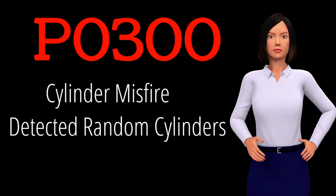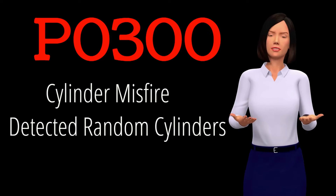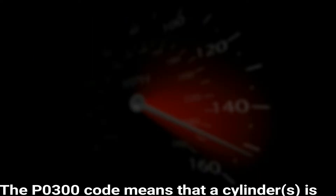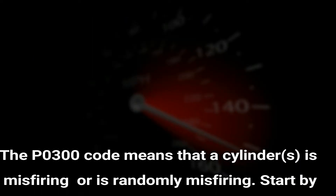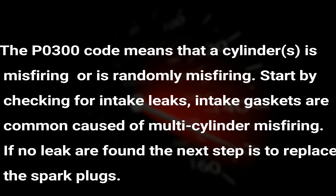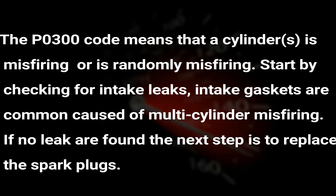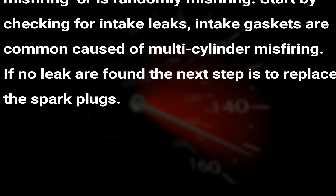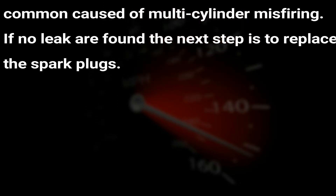P0300 Cylinder Misfire Detected – Random Cylinders. The P0300 code means that a cylinder is misfiring or is randomly misfiring. Start by checking for intake leaks, as intake gaskets are a common cause of multi-cylinder misfiring. If no leaks are found, the next step is to replace the spark plugs.